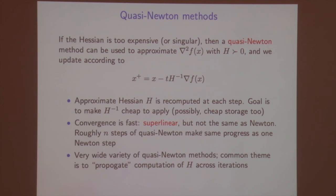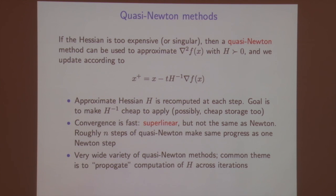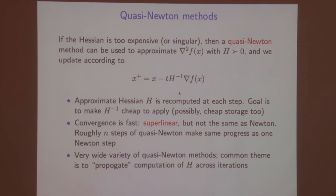Convergence is very fast with quasi-Newton methods — super-linear. Some basic results say they converge in linear time (like gradient descent under strong convexity), and stronger results say they converge in super-linear time, faster than linear but not at a quadratic rate. So convergence is somewhere between log(1/ε) and log log(1/ε). Roughly N steps of a quasi-Newton method make the same progress as one Newton step. One quasi-Newton step could be O(N) while a Newton step is O(N³) — a very favorable trade-off.